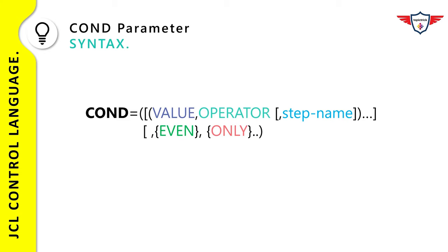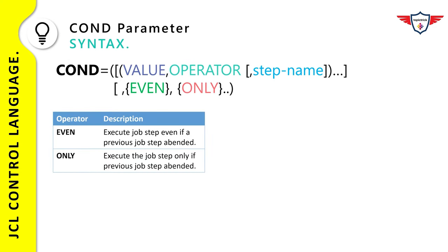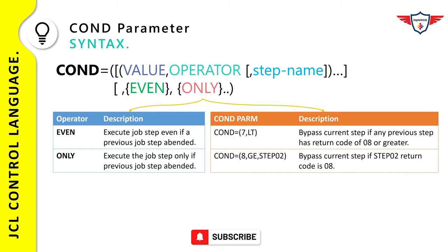The conditional parameter on an EXEC statement is more flexible than on the JOB statement. The syntax is almost the same, but with additional subparameters you have more control over individual job steps. You can specify a return code and relational operator to skip a particular step rather than all subsequent steps. You can also specify a step name to test the return code of a specific job step, and you can use two additional subparameters — EVEN and ONLY — to execute certain steps if your job fails.